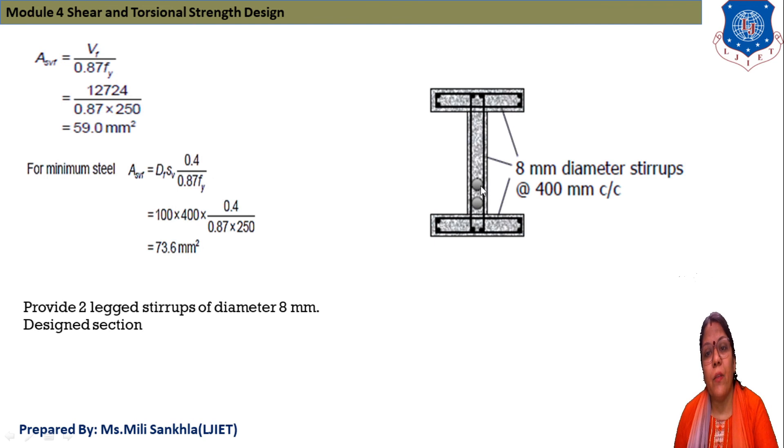τmax = Vu·Aȳ/(I·df). After putting all values 1.17 N/mm² we get. Vf equals τmax/2 × bf/2 × df, we get 12724 N shear force for flange. Provide area of stirrups Vf/(0.87fy) = 59 mm². Provide two-legged stirrups of diameter 8 mm at 400 mm spacing for design section. Now we stop here, in next session we solve another example and start new topic.